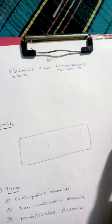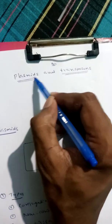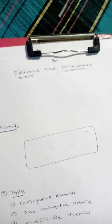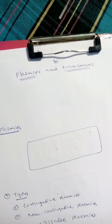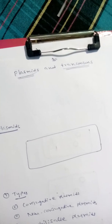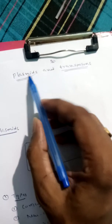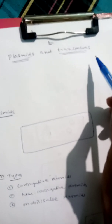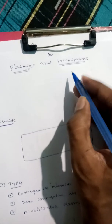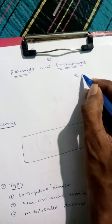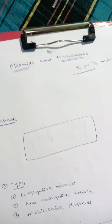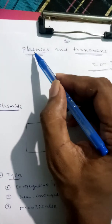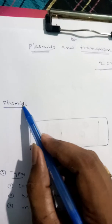Good evening students. Next topic is plasmids and transposons. In the previous class I discussed gene transformation — how genes are transferred from one bacteria to another, covering transformation, transduction, and conjugation. Next topic is plasmids and transposons. In the final exam there are two or three marks questions on this. First, let's come to plasmids.